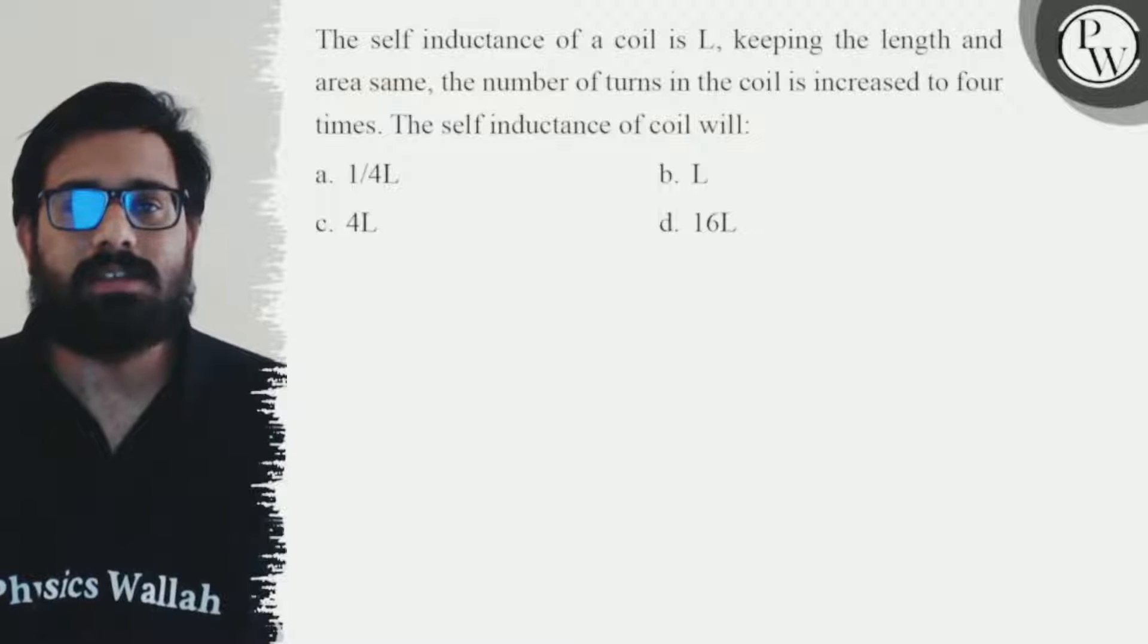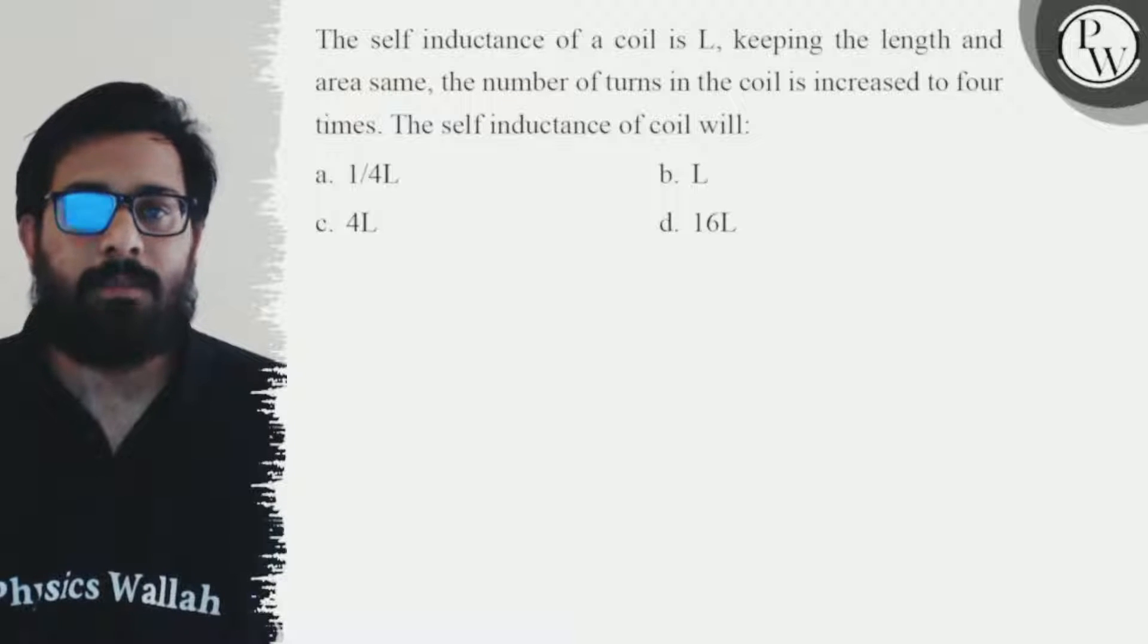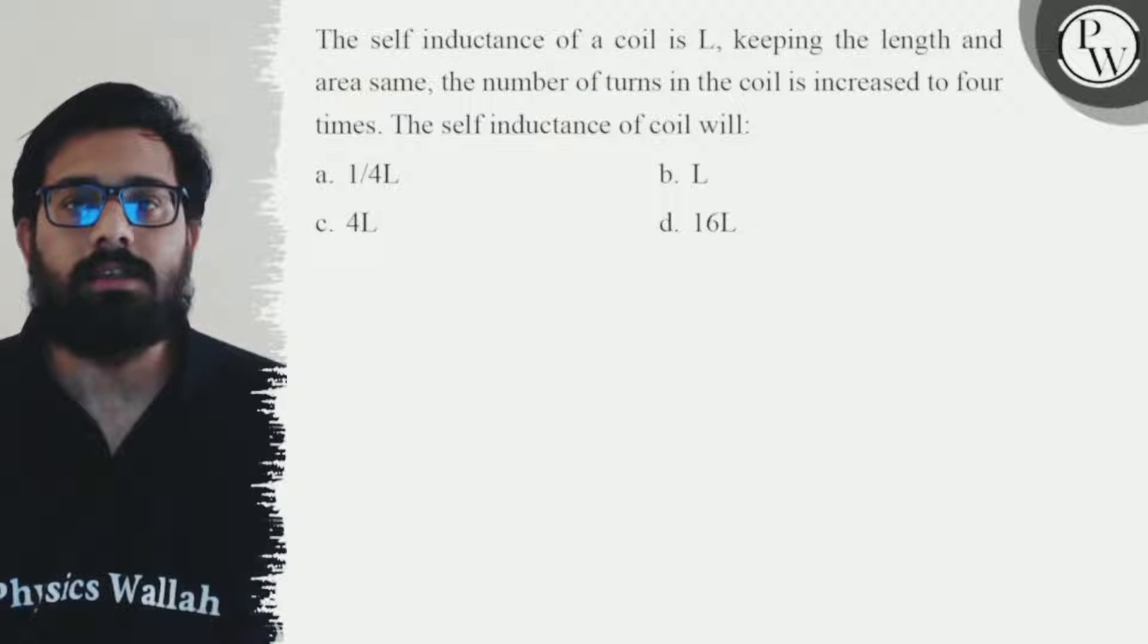Hello Machos, so let's see the question. The self inductance of a coil is L. Keeping the length and area same, the number of turns in the coil is increased to 4 times.